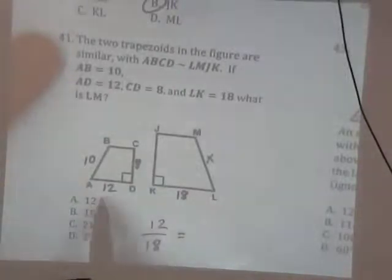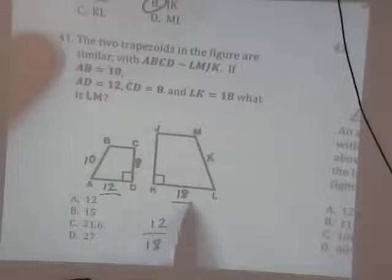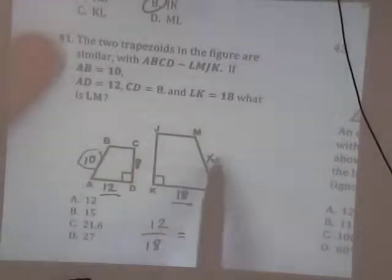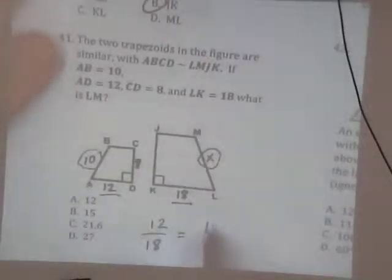X over 10. Wait, no. 18 over X. Alright. Wait, wait, X over 8. 12 over 18 equals X over 8. Isn't this the one that corresponds to this? Oh, 10 over X. 10 over X.